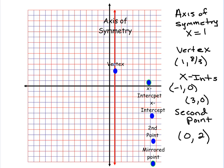My two X-intercepts is negative one, zero. So that's right there. And the other one is three, zero. So that's right there. I'm going to graph my second point, and that's at zero, two. So zero, two goes right about there.